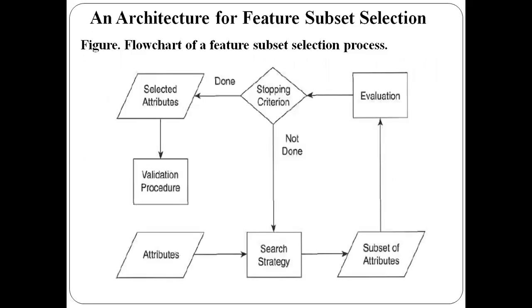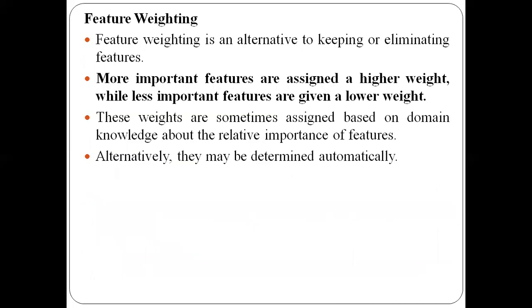In the last class we saw the architecture of feature subset selection. It is used to select only a subset of features from the available features so that we can efficiently perform data mining algorithms. We select features based on some criteria or search strategy.